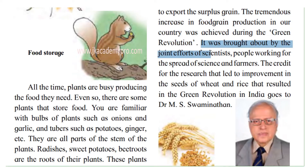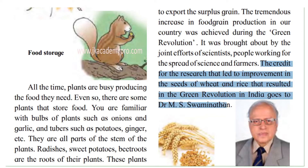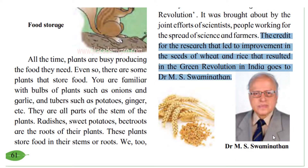The green revolution was brought about by the joint efforts of scientists, people working for the spread of science, and farmers. Lots of scientists came together and did a lot of research on finding better quality seeds. The credit for the research that led to improvement in seeds of wheat and rice, which resulted in the green revolution in India, goes to Dr. M.S. Swaminathan. He is the scientist who initiated and made this possible in our country, so the credit goes to him.